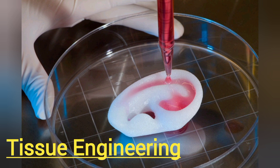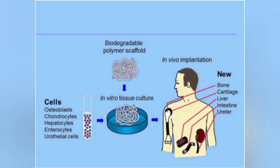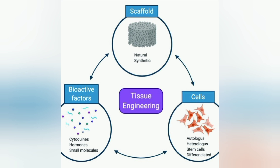Basically, tissue engineering is a scientific field concerned with the development of biological substitutes capable of replacing diseased or damaged tissue in humans. Tissue engineering involves different types of components which are stem cell, scaffold, and environment and factors that restore, maintain and induce growth of tissue. One by one I will explain every step of tissue engineering with its basic components.